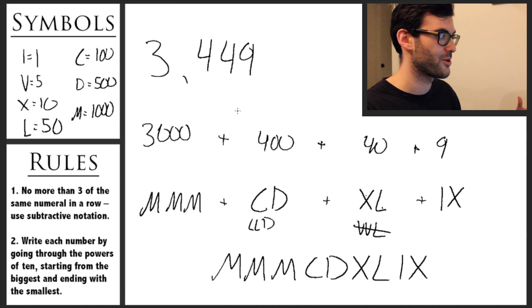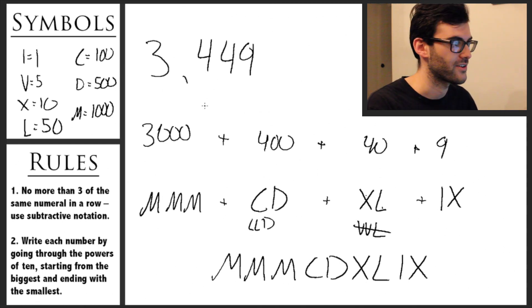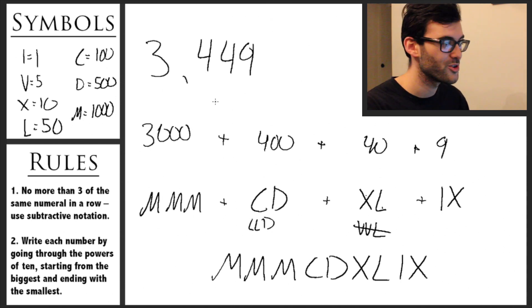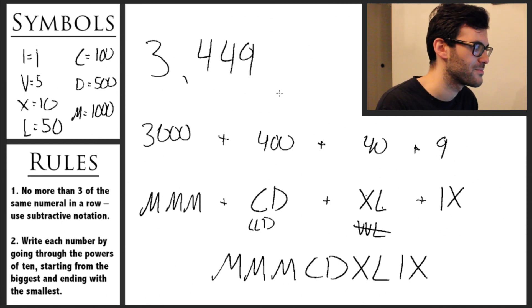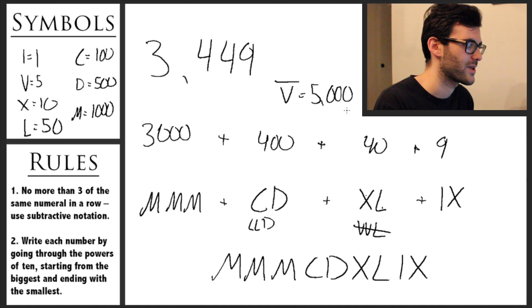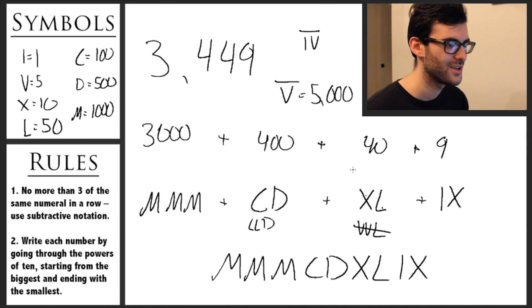You might also be wondering: we've got 3,000 here — how would we write something like 4,000? Is there a numeral above M? There really isn't, at least not in modern Roman numerals. There are some ways around this — for example, some systems use a line over the number to equal the number times 1,000. But in general, this is modern Roman numerals and there's no standard symbol higher than M.